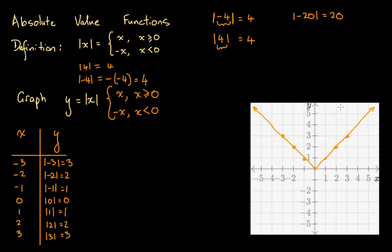We can rewrite y equals the absolute value of x as: x for x greater than or equal to 0, or negative x for x less than 0. On the graph we have two different lines: y equals x, defined only for the domain x greater than or equal to 0, and y equals negative x, defined only for x less than or equal to 0. We only have the right-hand portion of the y equals x curve and the left-hand portion of the y equals negative x curve.